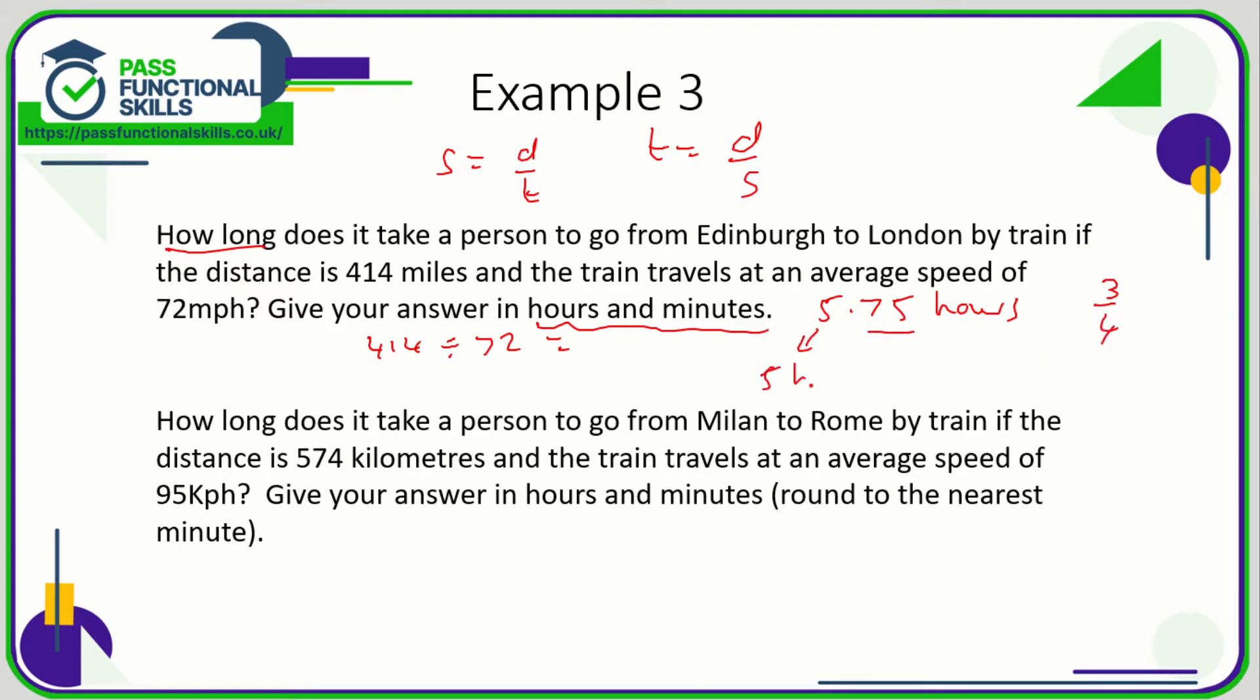So here we've got five full hours and three quarters of an hour, which is 45 minutes. In this next example, again speed is distance divided by time, so time is distance divided by speed. So the distance is 574 divided by 95.